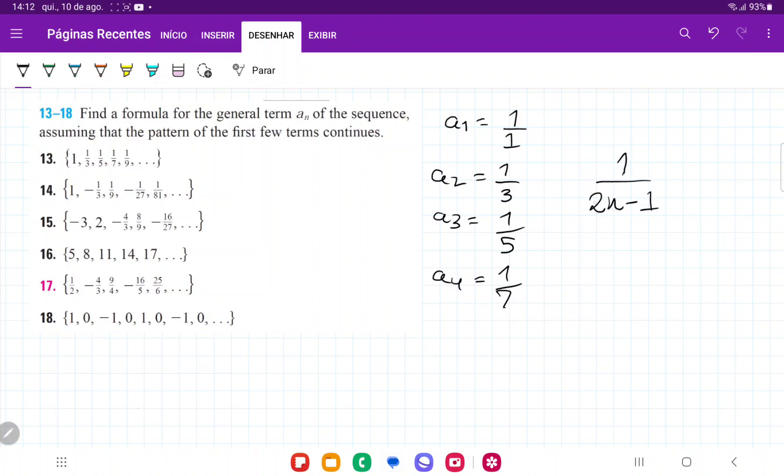And let's just check. So 2 times 1 minus 1 is 1. 2 times 2 minus 1 is 3. 2 times 3 minus 1 is 5. And so on. And we can see that this works for a4 and a5 as well.